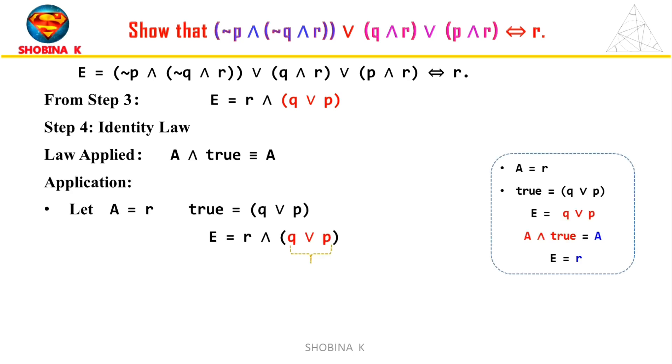Here, let A be R, and true be Q or P. On applying the identity law to the expression, we substitute Q or P with true. From that, we get R and true. Using the identity law, we simplify this to R.